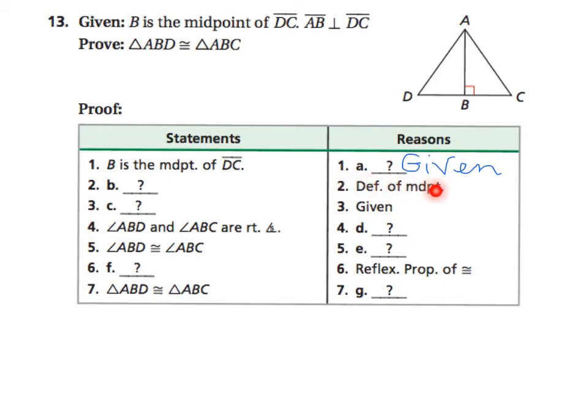The next line says definition of midpoint. If DC is the segment, and I am told that point B is the midpoint, that means that DB and BC are congruent. B chopped that in half. So segment DB is going to be congruent to segment BC.